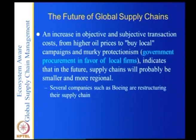The future of global supply chains shows an increase in objective and subjective transaction costs from higher oil prices, buy-local campaigns, and murky protectionism — government procurement in favor of local firms. This indicates that future supply chains will probably be smaller and more regional. Several companies such as Boeing are restructuring their supply chains. This shows the importance of supply chain design and the need for frequent supply chain redesign — it is not as though you can design your supply chain and sit back and relax for years. Thank you.